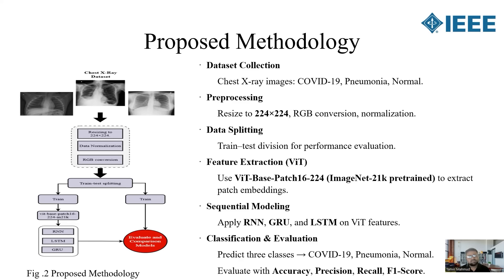First, chest X-ray images were collected for three classes — COVID-19, pneumonia, and normal — from various open datasets. All images were resized to 224×224, converted to RGB, and normalized for consistent input. The dataset was then split into training and testing sets.